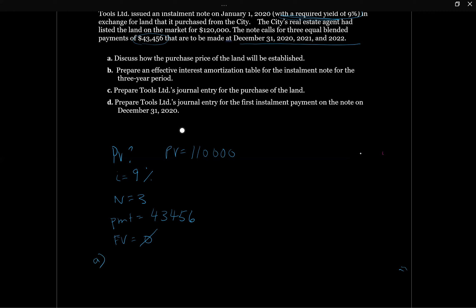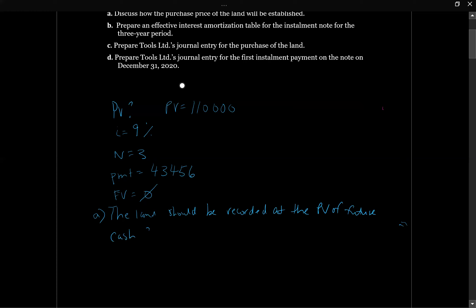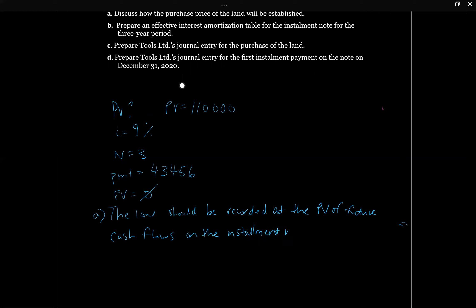That is going to be the amount we want to record the land at. So Part A — discuss how the purchase price of the land is established: the land should be recorded at the present value of future cash flows on the installment note, which is $110,000.